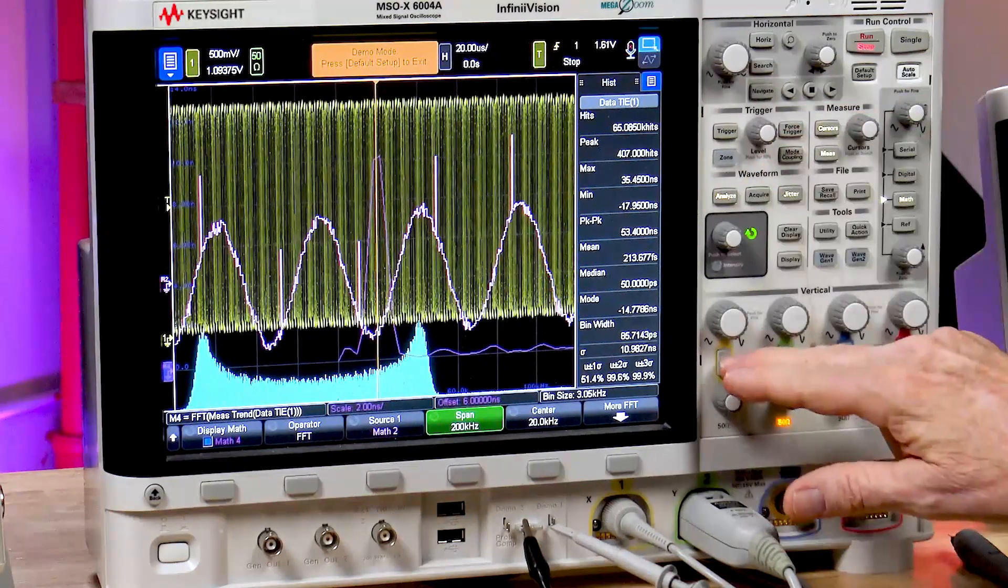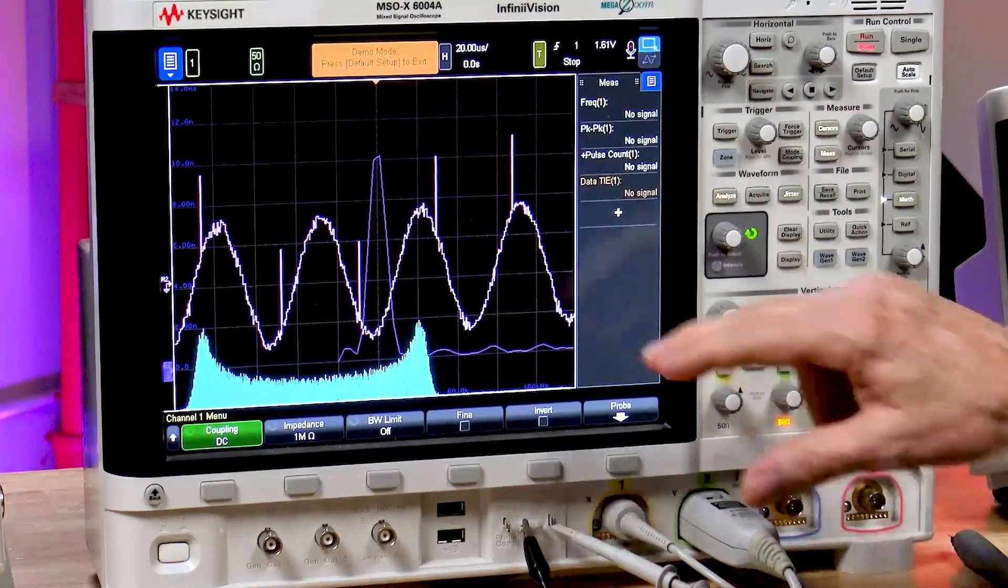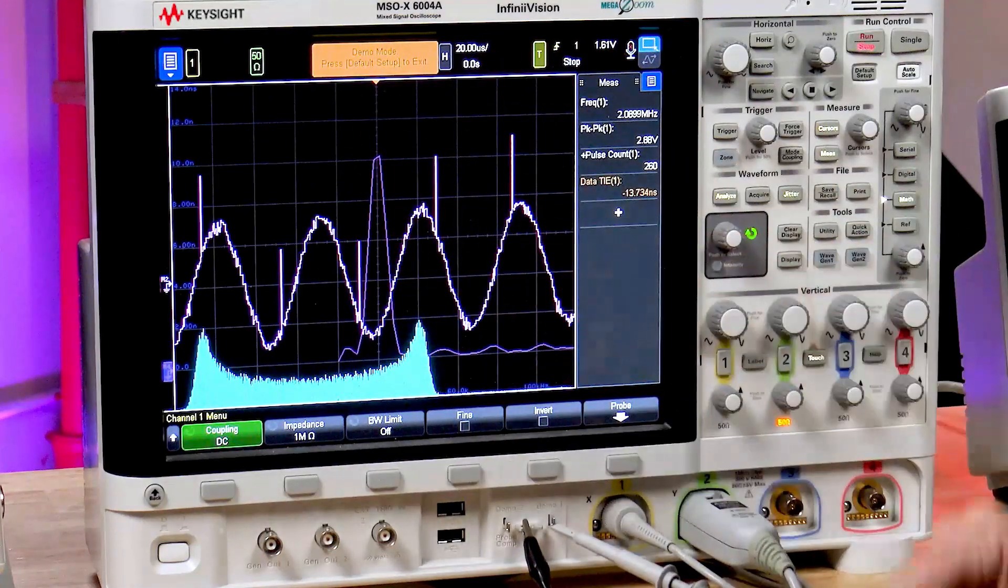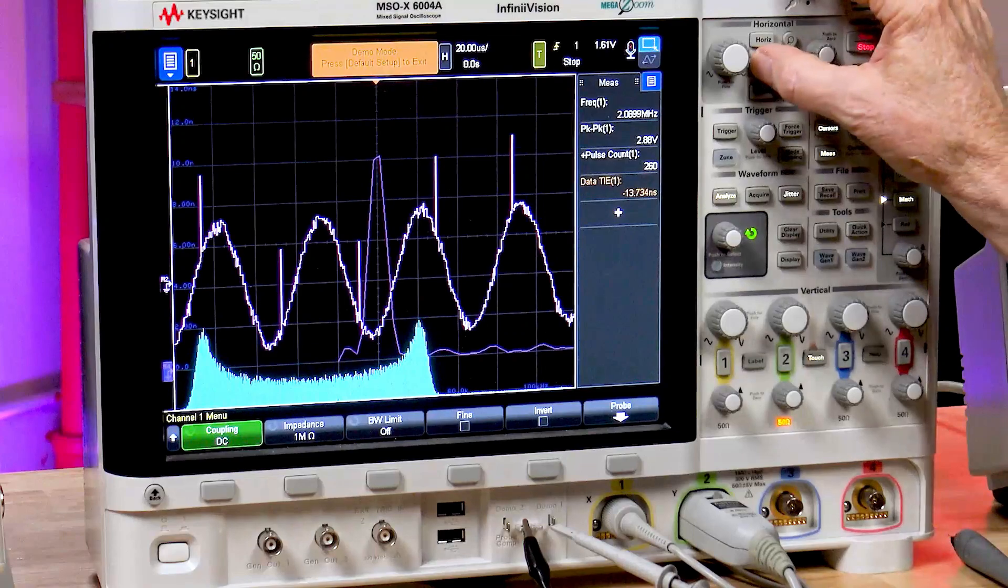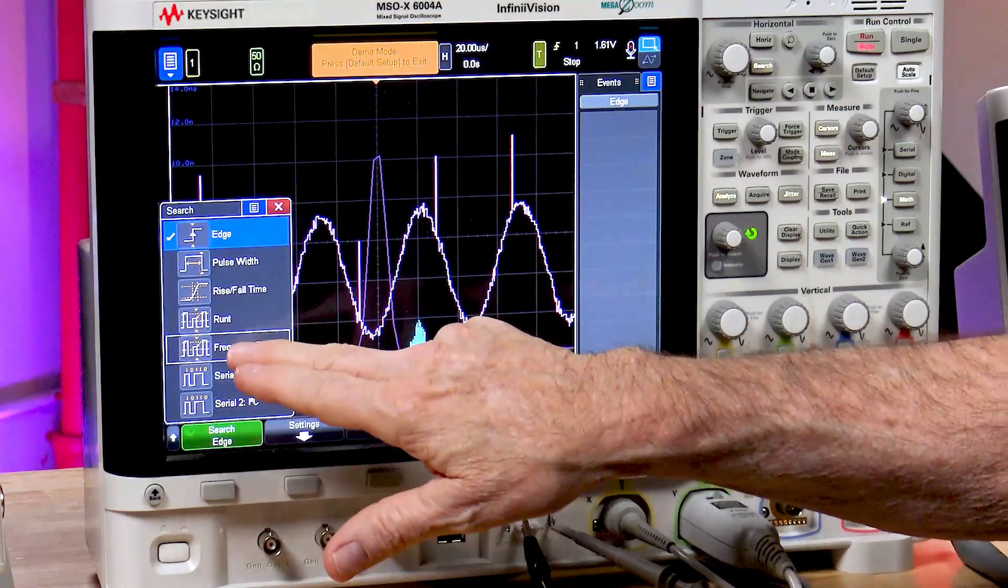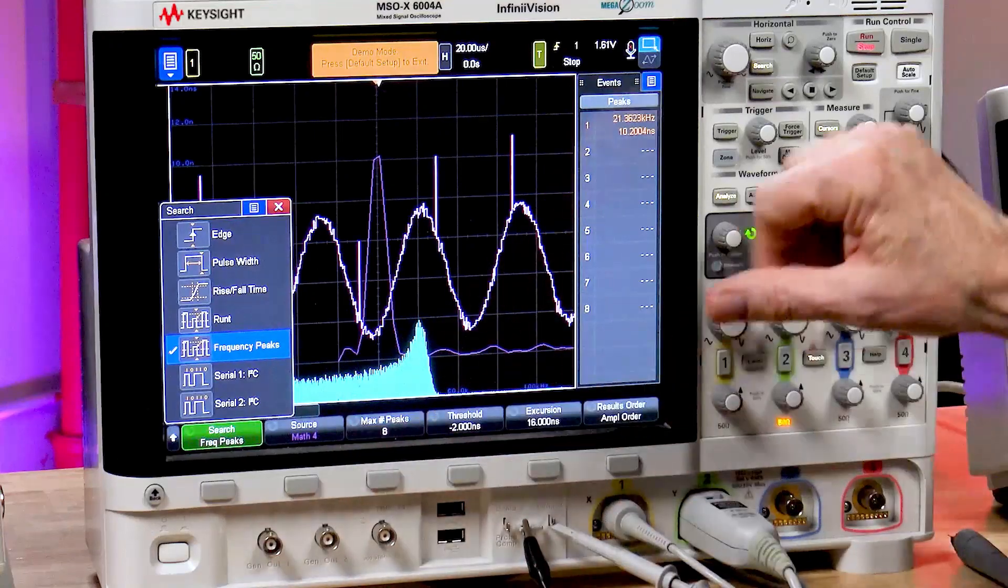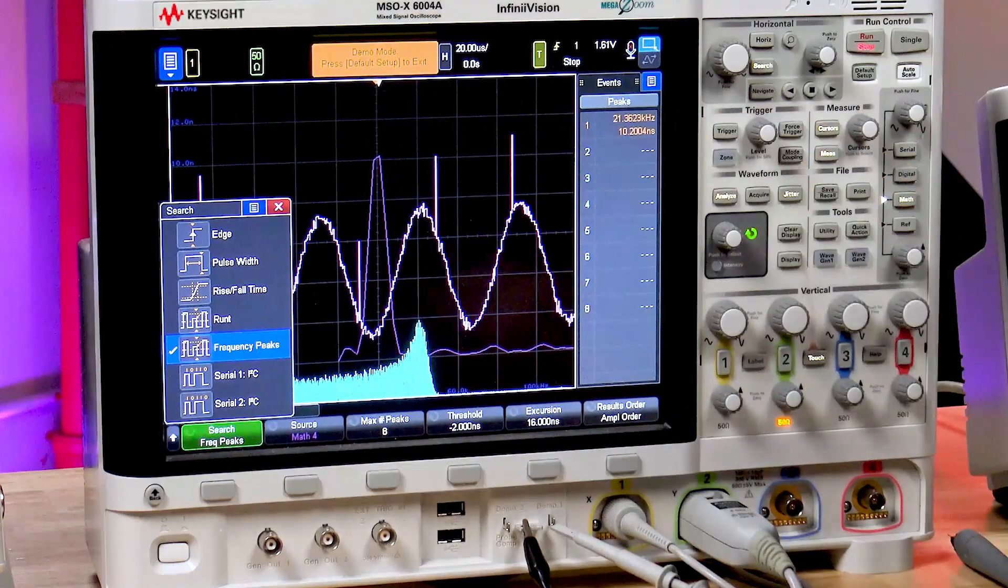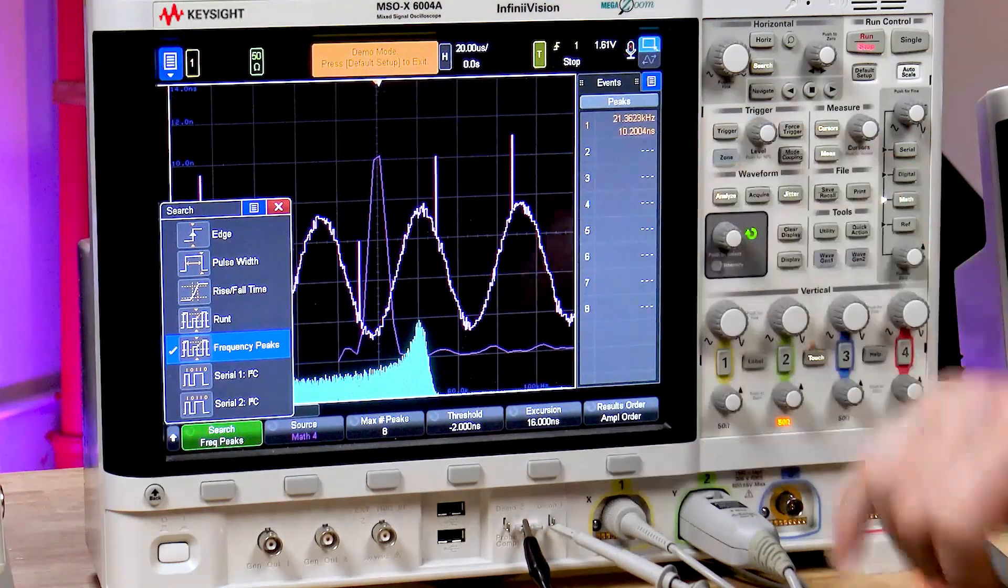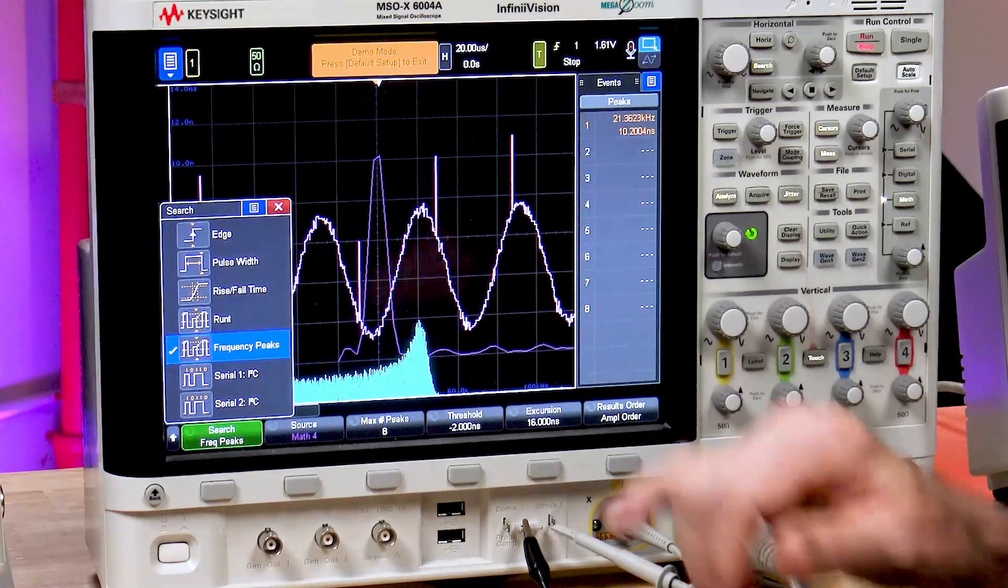And let me turn this signal off. This is the spectrum waveform. And if we do a search on it, frequency peaks, it finds a peak at exactly 21 kilohertz with an amplitude of 10.4 nanoseconds.